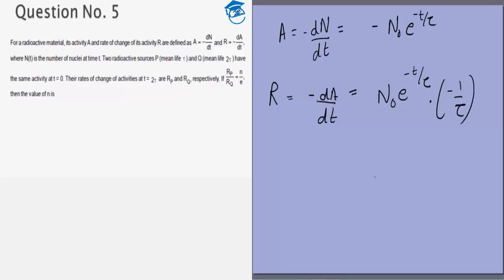Now we are given that their activity is the same at t equals 0. At t equals 0, the activity is minus n0, so n0 is the same for both of them and we want the ratio of R at t equals 2 tau.